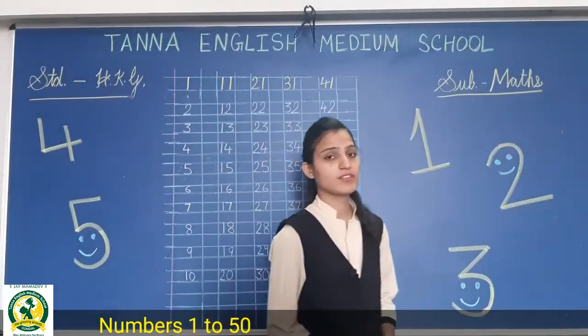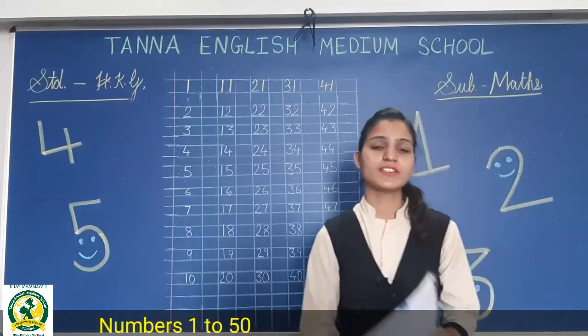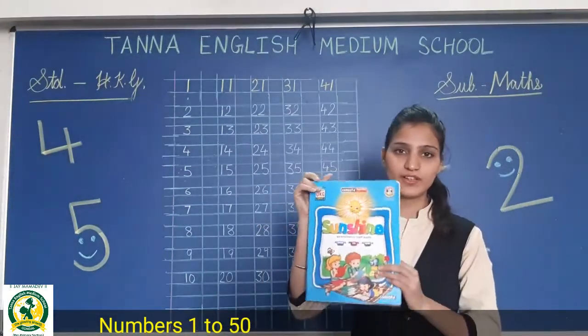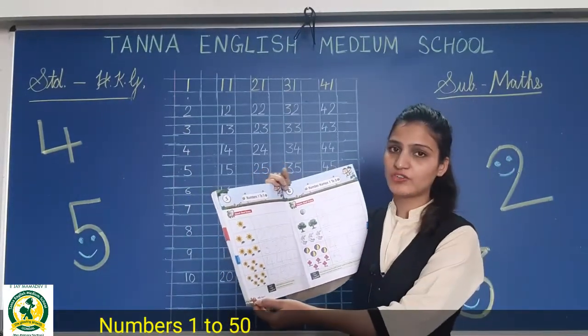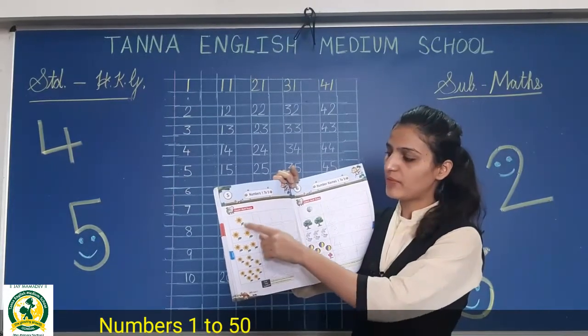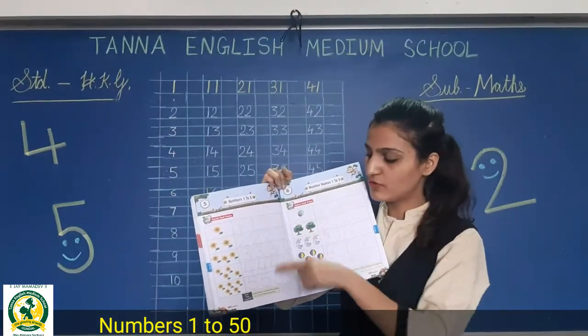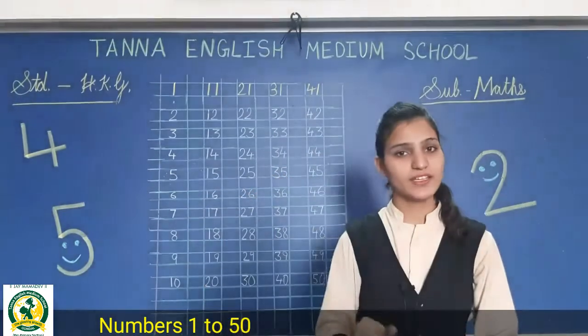Okay students, this you have to do in your math CW and IW. Now take out your sunshine book. In sunshine, take out page number 122. Count and trace. Okay students, thank you.